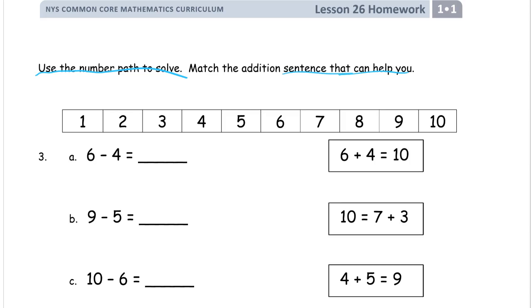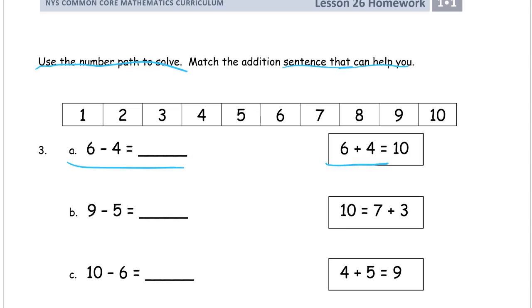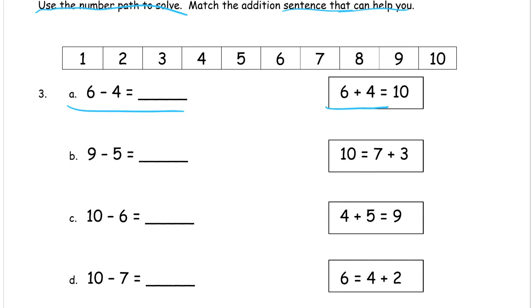Match the addition sentence that can help you. So here we have a subtraction equation, and here's the addition sentence that can help us. They're not always going to be right next to each other. This has a six and a four — which one of these has a six and a four? Well, this has a six and a four, and so does that one, but it can't be both. So let's use the number path to solve six minus four: start at the four and go up to the six — it takes one, two more to get to six, so they're two apart. Now we have a six and a four and a two, so we know which one it is.